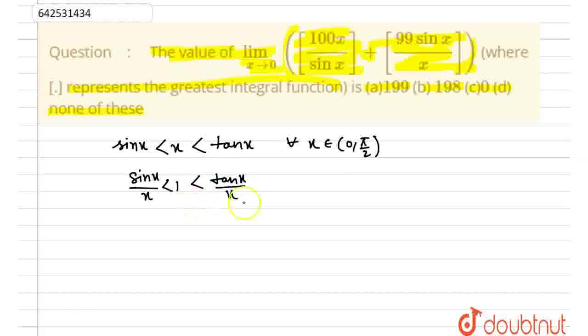And for this part, we would be looking at this. Tanx written as sinx by cosx. Then cosx goes there. So, sinx by x is greater than cosx and sinx by x is less than 1. These are the two inequalities which we would be using.